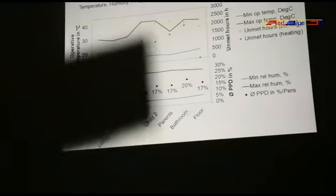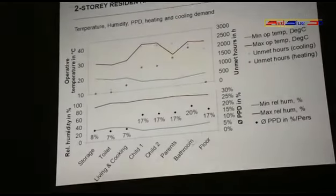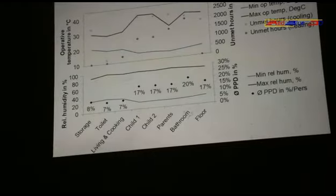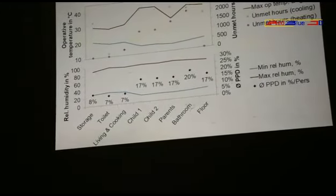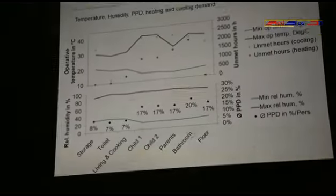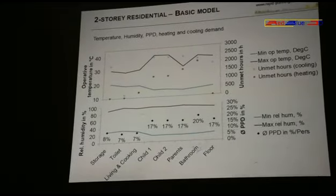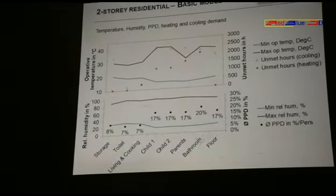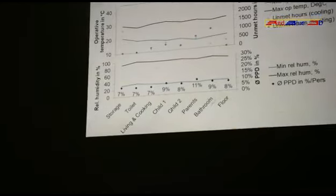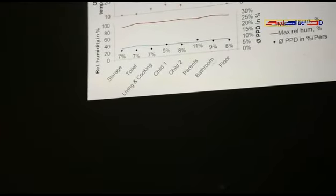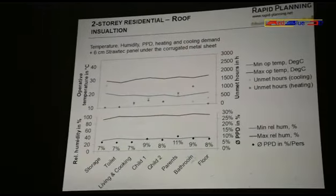We also see it in the unmet cooling and heating hours. In the 8,700 hours of the year, in 1,500 hours you would need heating systems to get the right temperature in this room. Then we did a lot of changes — for example, window size, orientation, shading over the windows. But one thing that helped most was insulation of the roof. We put 6 centimeters of a straw panel under the corrugated metal sheet. You can also put in an extra ceiling with space for air and ventilation bricks, which has the same effect. But with the straw panel insulation, you have more space in the room.